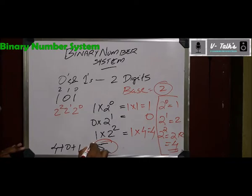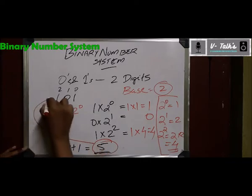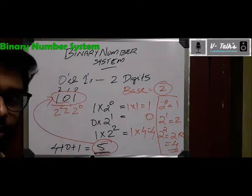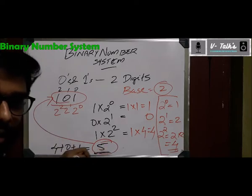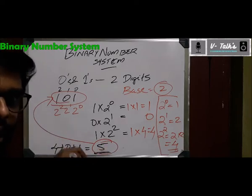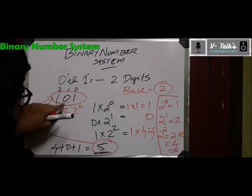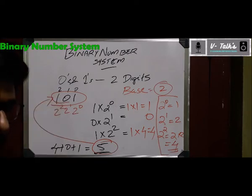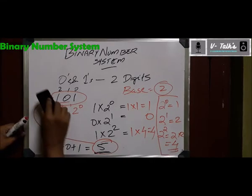When you type the number 5 in the computer, in the computer memory it is actually stored as 1, 0, 1. So let us go to one more example for understanding.